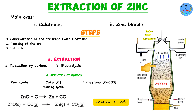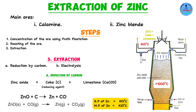The zinc vapor moves out of the furnace and into the condenser, which is maintained at around 600°C. The melting point of zinc is 420°C and the boiling point is 913°C, so at 600°C — between these two values — zinc exists in liquid state. This makes the condenser ideal for the zinc vapor to condense into liquid zinc.